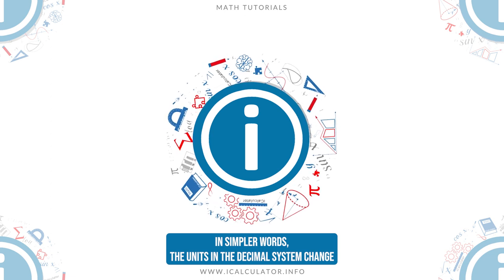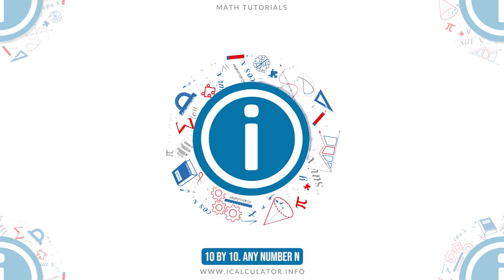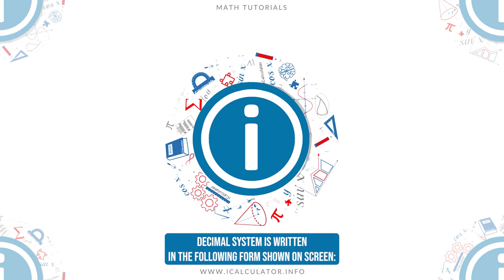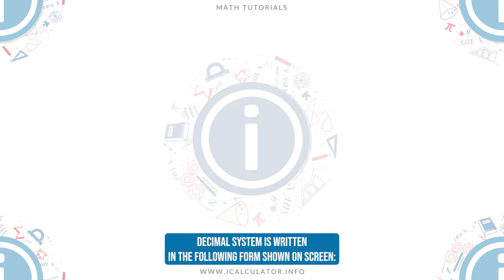In simpler words, the units in the decimal system change 10 by 10. Any number n in decimal system is written in the following form shown on screen.